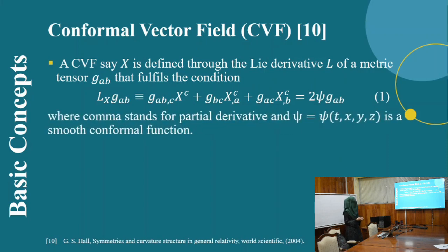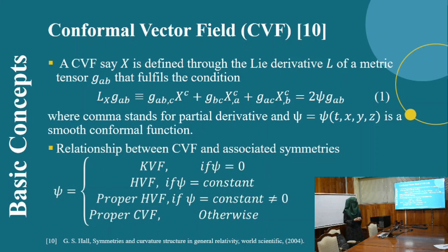Now, if this function ψ becomes 0, then we have a Killing vector field. If it equals a constant, we have a homothetic vector field. We have proper homothetic vector field if it is constant but not equal to 0. Otherwise, we have proper conformal vector field.